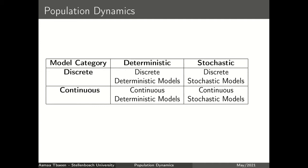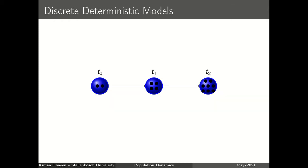In this presentation we are going to focus on the discrete population models. Let's start with the discrete deterministic model. Discrete means that changes happen at specific time intervals — as we can see here, the calculation begins at time zero, then at time one, and so on. The model is defined as deterministic when we can completely calculate the population size at any time, and we can see that the population doubles every time interval in this scenario.